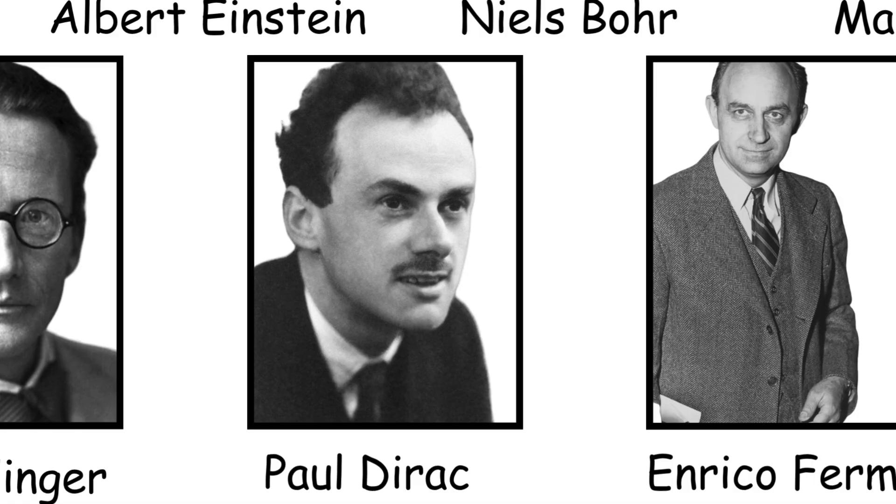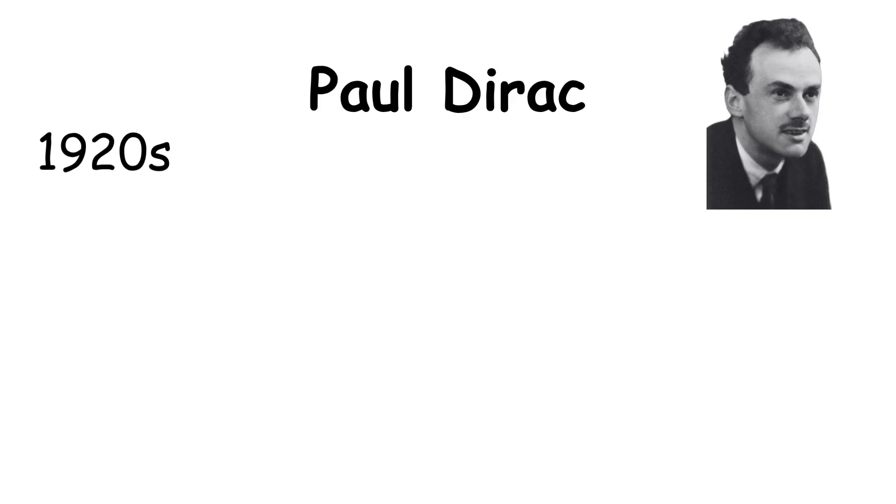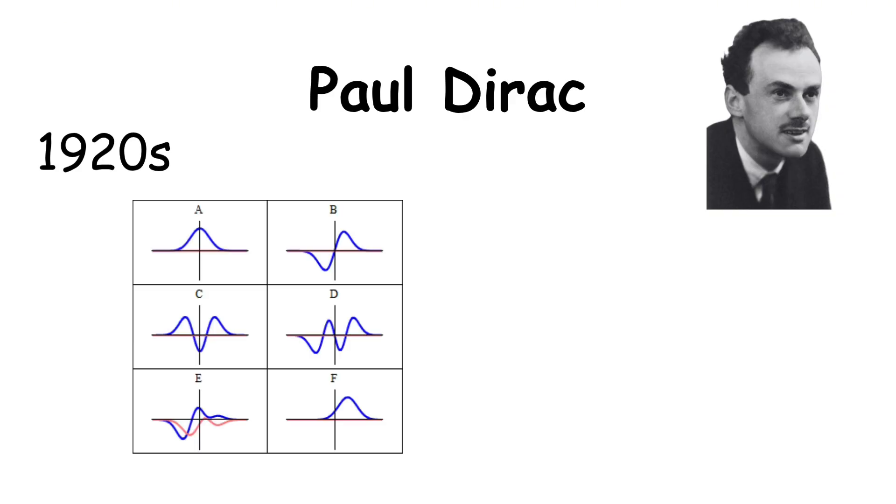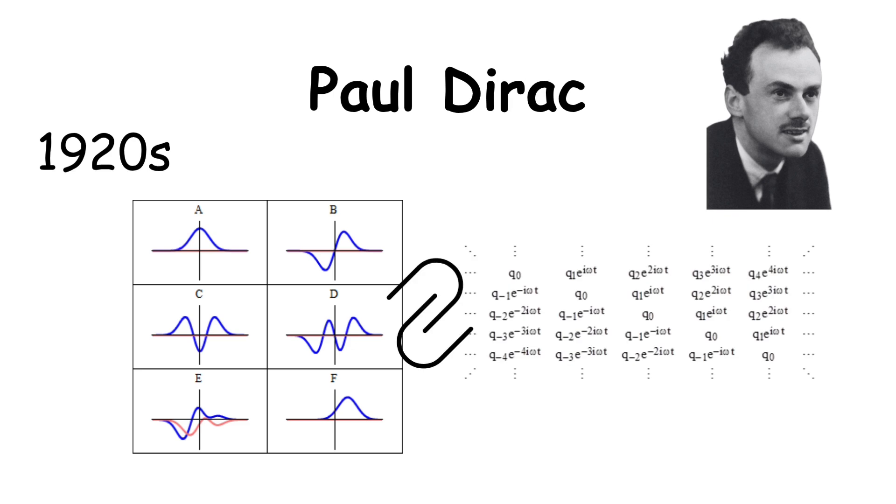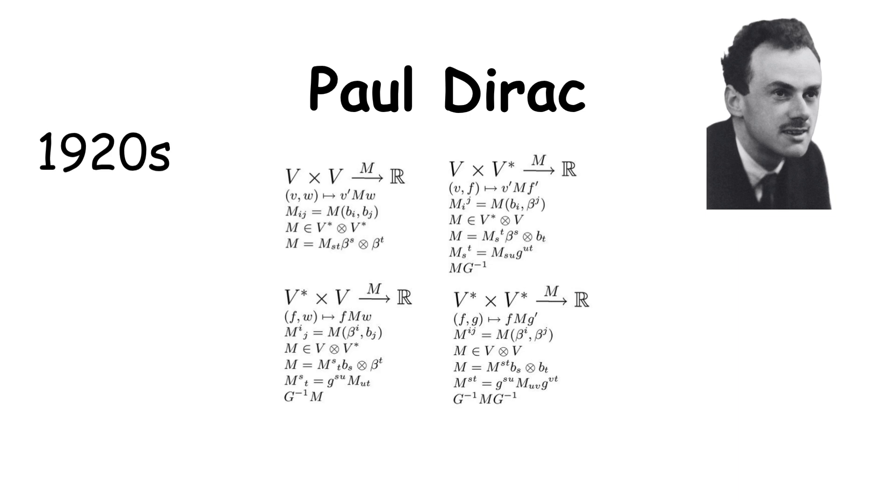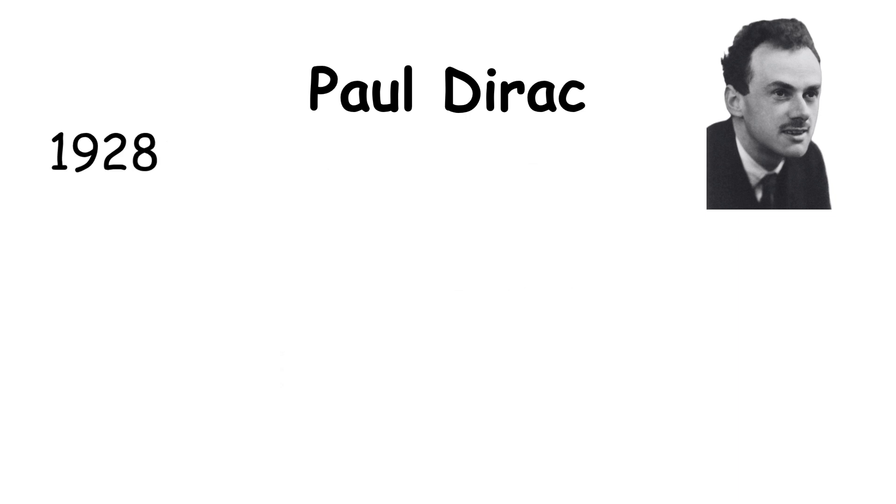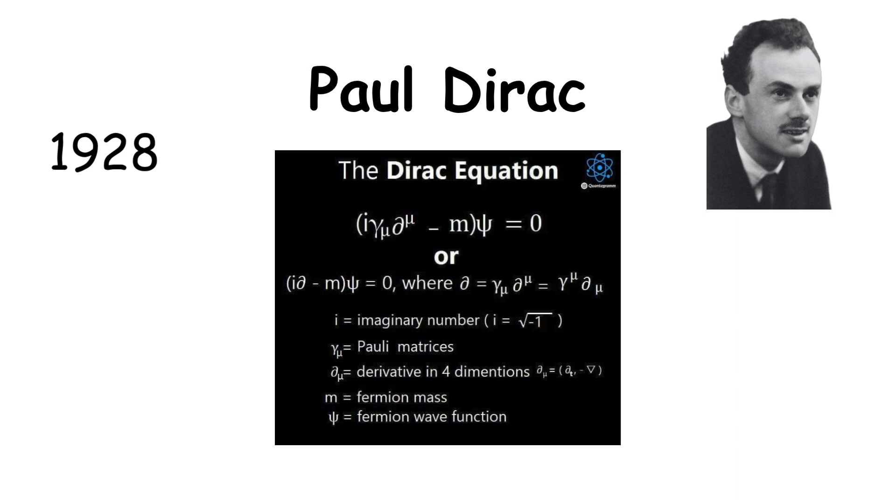Paul Dirac. In the late 1920s, he extended Schrödinger's wave mechanics and Heisenberg's matrix mechanics by unifying them into a more general framework using abstract algebra. Then, in 1928, Dirac developed the Dirac equation, which described the behavior of electrons while fully including special relativity.